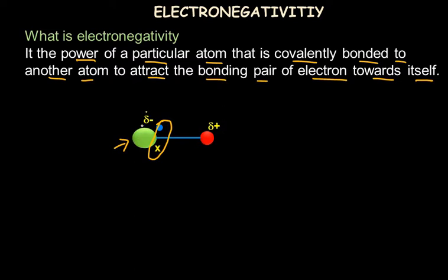One atom becomes partially negative and the other atom turns out to be partially positive, making this a polar bond. We would say that this atom is an electronegative atom compared to the other atom, because it is able to attract the electron pair towards itself.